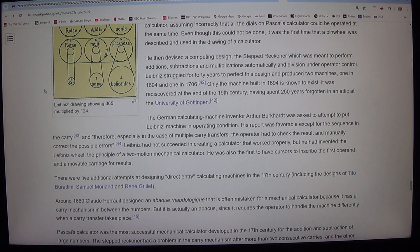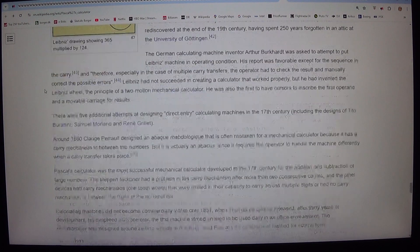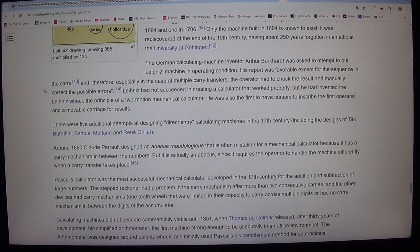The German calculating machine inventor Arthur Burkhardt was asked to attempt to put Leibniz's machine in operating condition. His report was favorable except for the sequence in the carry. And therefore, especially in the case of multiple carry transfers, the operator had to check the result and manually correct the possible errors.